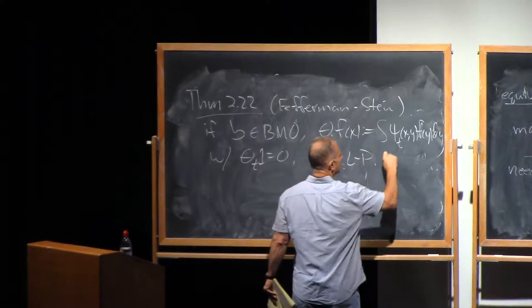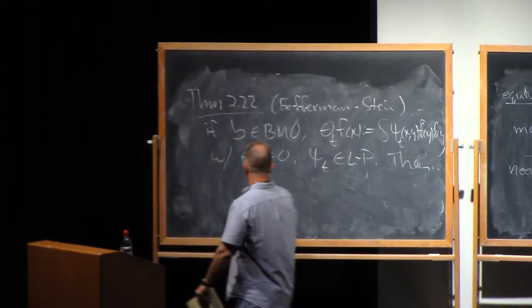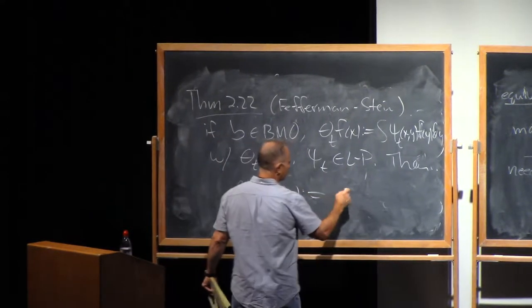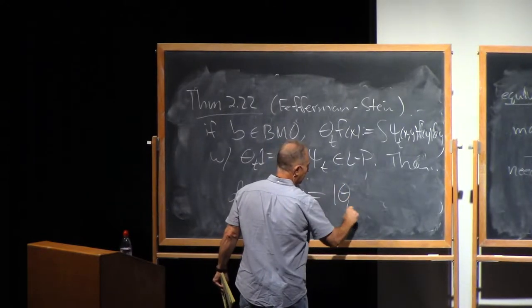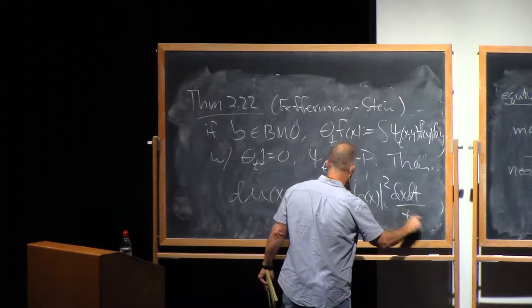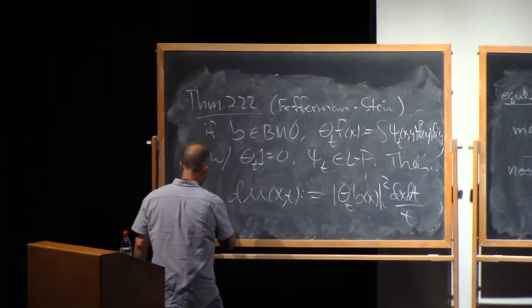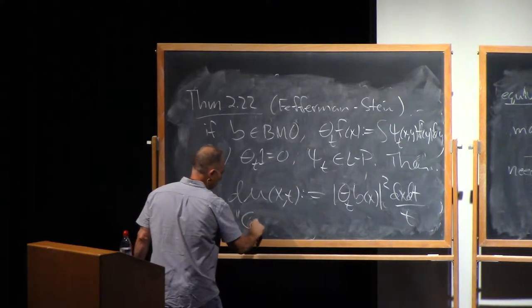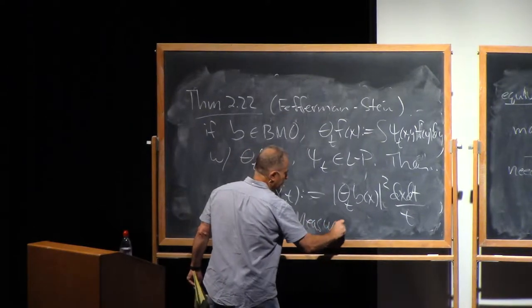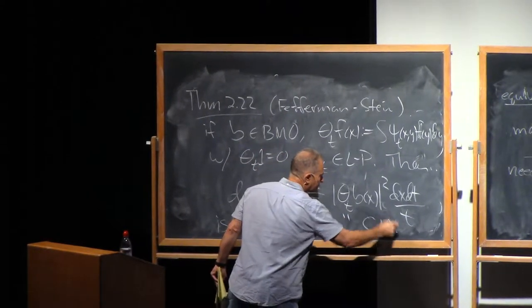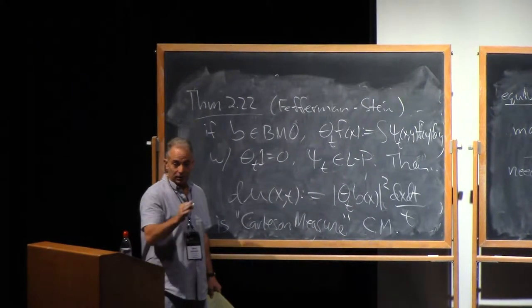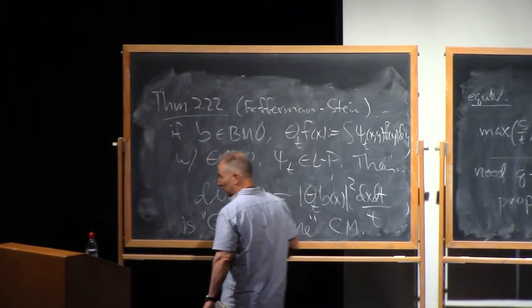And then the conclusion is that the measure on the upper half space, d mu of X,T, defined to be theta_T B of X squared dx dt over T is what's called a Carleson measure. And for short, from now on, I'll just abbreviate those as CM. CM always means Carleson measure. And what does that mean?